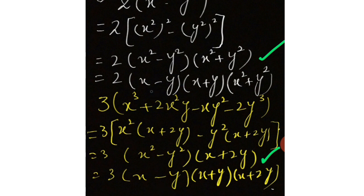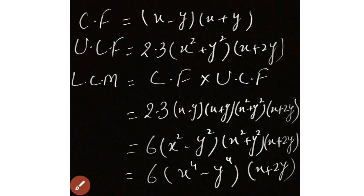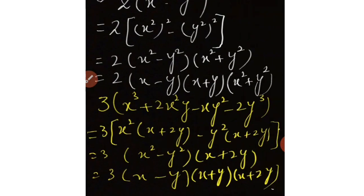Common factor hai: (x minus y), (x plus y) — and this is the common factor. Now we go to uncommon factor. Our uncommon factor is: 2, x² plus y², 3, and (x plus 2y).